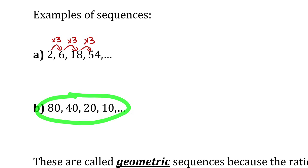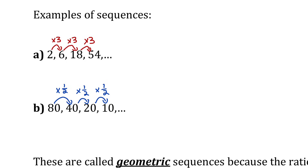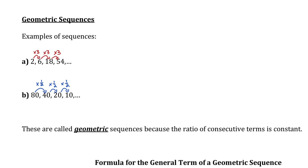There's a constant ratio for this second pattern of numbers as well. We always want to describe the ratio in terms of what we multiply the first number by to get the second. So 80 times one half equals 40, 40 times one half equals 20, and 20 times one half equals 10. You can get that ratio by dividing the second number by the first: 40 divided by 80 is one half, 20 divided by 40 is one half, and 10 divided by 20 is one half. Constant common ratio — it's a geometric sequence.